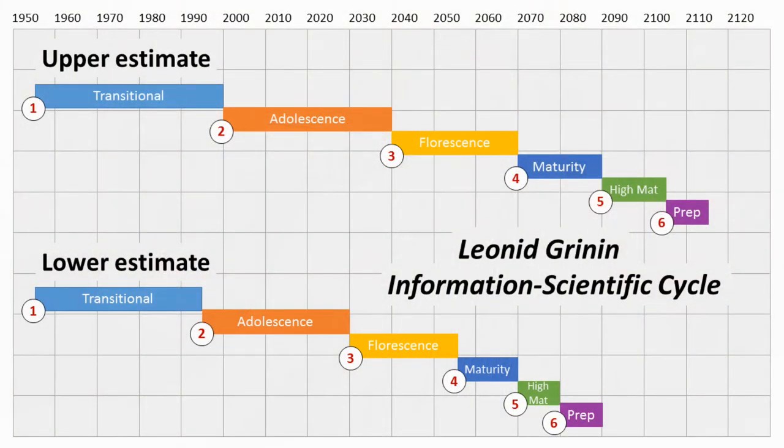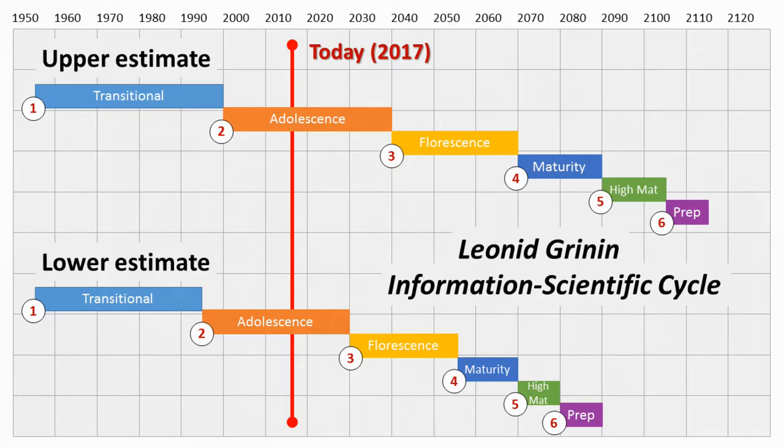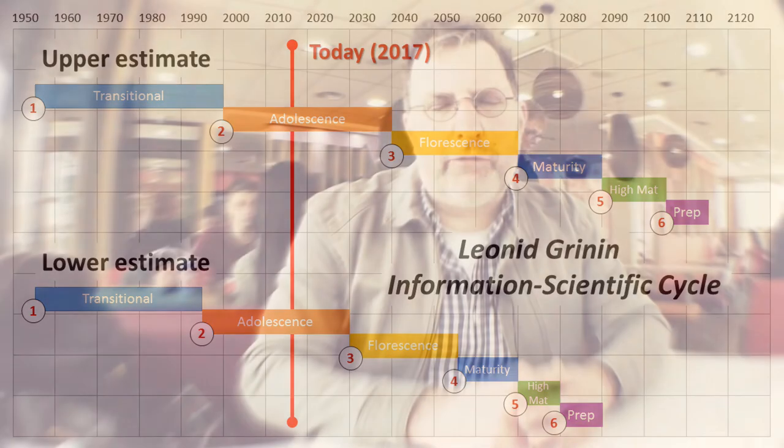As far as the present wave is concerned, he has an upper and lower estimate of the timings of the different stages. Either way, we are currently in stage two of the information scientific wave, and it will give way to the next stage in 2040 according to the upper estimate, or 2030 according to the lower estimate. By Grinin's theory, our time — as stage two of the present production principle — would have the same feel and characteristics as stage two of the industrial cycle, which corresponds to the period between 1630 and 1730.